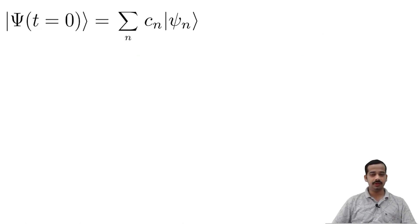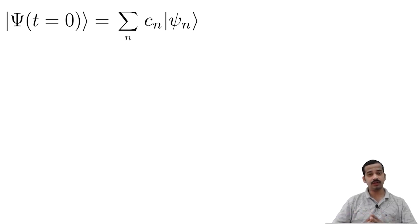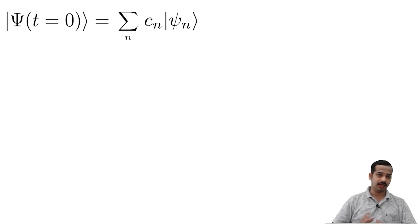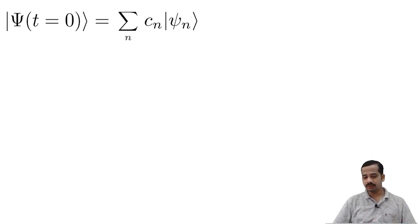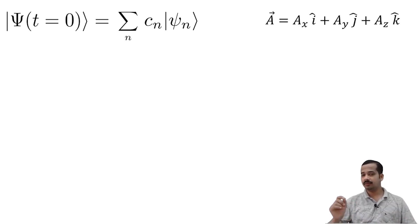The next step is to write the state at t equal to 0 in terms of a linear combination of energy eigenstates. This process is allowed by the completeness condition of energy eigenstates. Energy eigenstates are always complete — they span the space. I made a separate video on this; you can find that link in the description. This process of writing the initial state in terms of energy eigenstates is equivalent to writing a general vector in terms of i-cap, j-cap, k-cap.